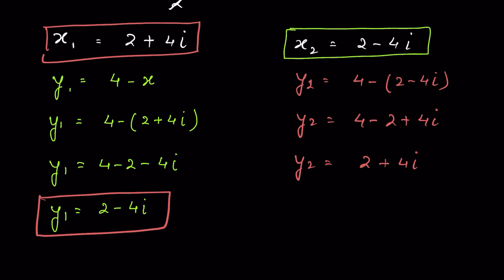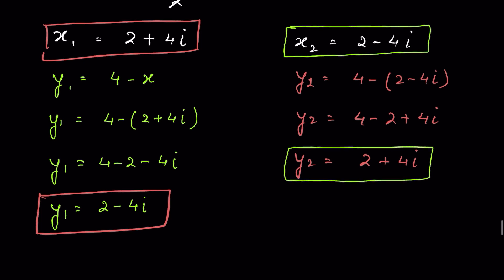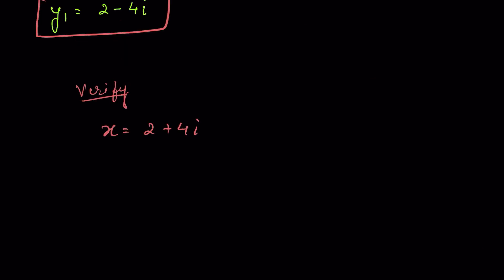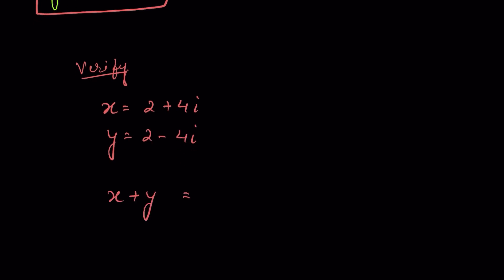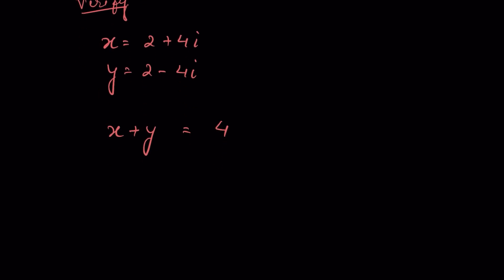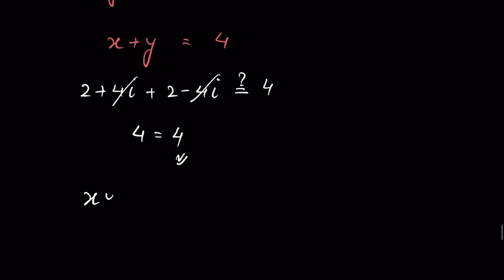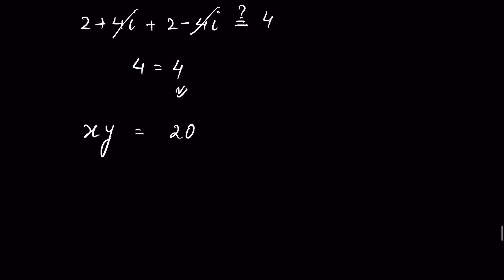So when x equals 2 plus 4i, y equals 2 minus 4i, and when x equals 2 minus 4i, y equals 2 plus 4i. Now let's verify: when x equals 2 plus 4i and y equals 2 minus 4i, x plus y equals (2 plus 4i) plus (2 minus 4i). The 4i and minus 4i cancel, and 2 plus 2 equals 4 — LHS equals RHS. Now for x times y, we check (2 plus 4i)(2 minus 4i) should equal 20.